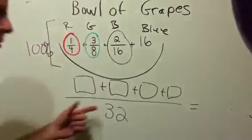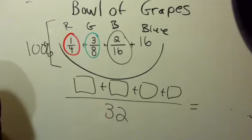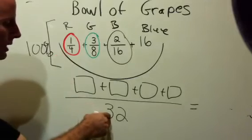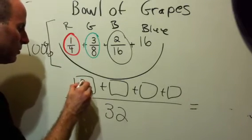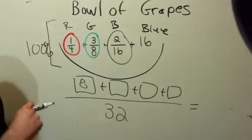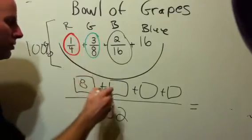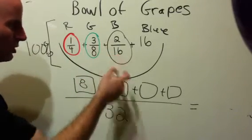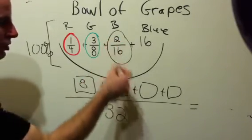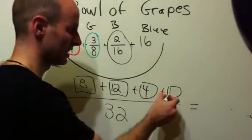Let's say you say there are 32 grapes. One fourth of 32, four goes into 32 eight times, so that's eight. Three eighths, eight times four gets 32, three times four gets 12. Two sixteenths, two times 16 is 32, two times two is four. And this last one we're saying is 16, there's 16 grapes in here, 32 all together.